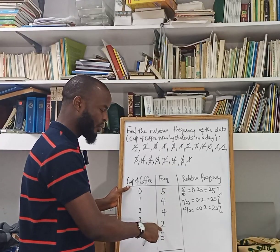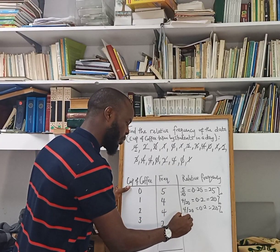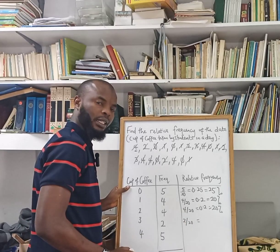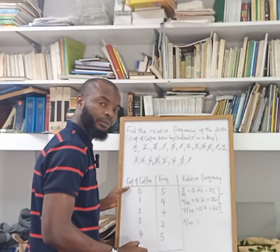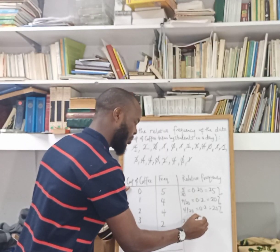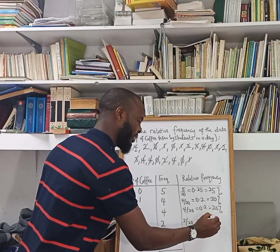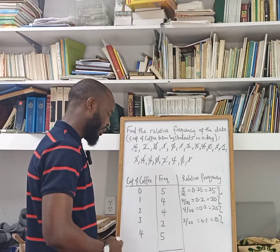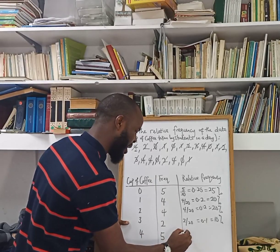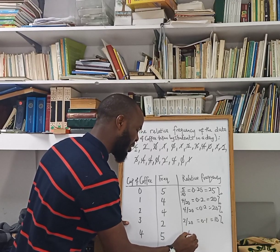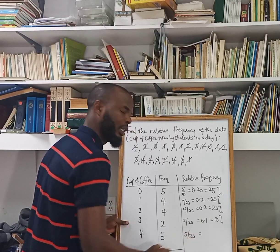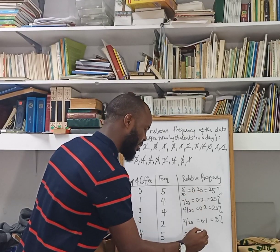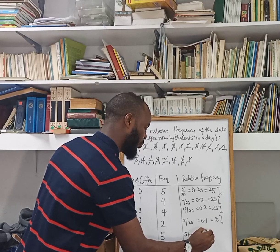For the fourth category I'm having 2, so it is 2 over 20, which is 0.1, which is 10%. Lastly, I'm having 5, so it is 5 over 20, which is 0.25, which is 25%.